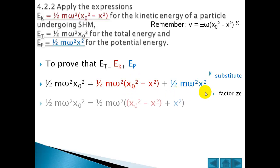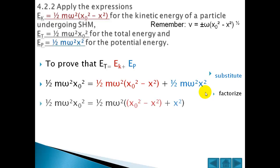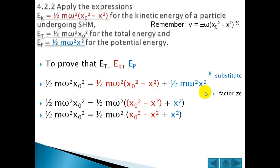And here is the proof. Factorize on the right hand side, taking out a factor of half m omega squared. Then we remove the brackets on the right hand side and subtract x squared. The two x squared terms will cancel each other out, so of course the left hand side will be equal to the right hand side.